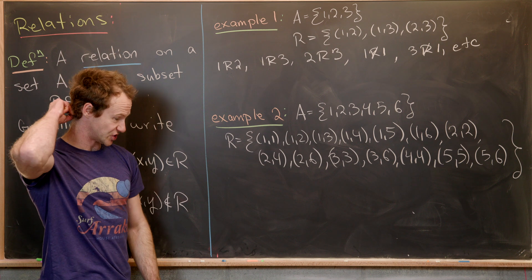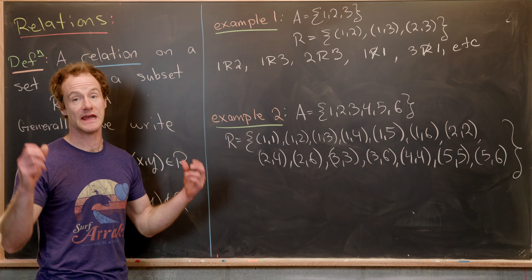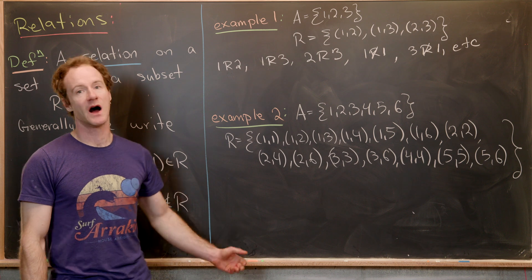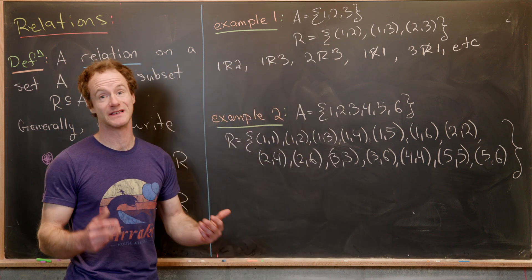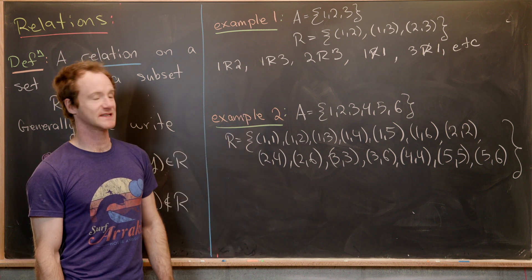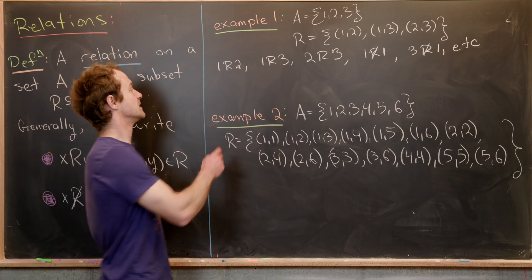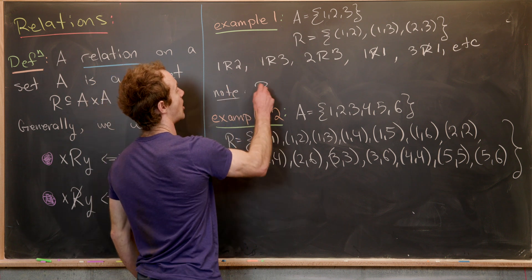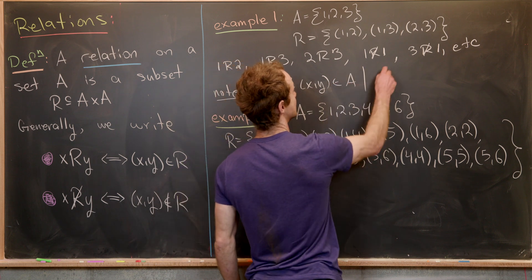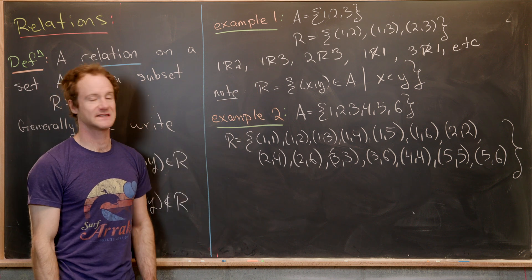Let's look at this relation and see if it represents something familiar from mathematics. If you look at it for a moment, you'll see that it is the less-than relationship. We can note that R is in fact all ordered pairs (x, y) in A such that x < y. Those are the only three ordered pairs satisfying this rule.